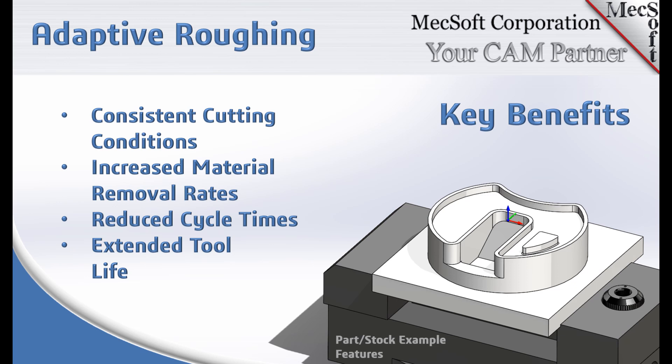With Adaptive Roughing, you can leverage several key benefits not available in other toolpath strategies. These include constant cutter engagement, resulting in a consistent cutting condition from entry to exit. Increased feed rates for faster material removal and reduced cycle times. It also reduces rapid acceleration and deceleration on your machine tool, minimizing tool wear and prolonging tool life.